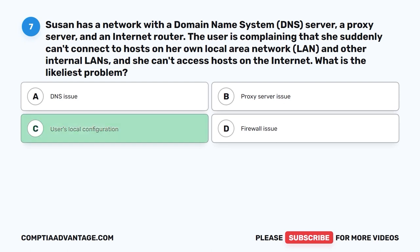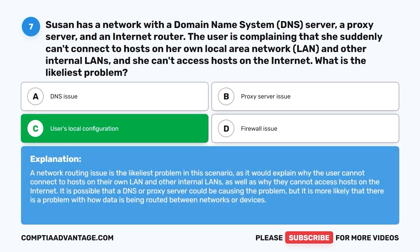The correct answer is C. User's local configuration. A network routing issue is the likeliest problem in this scenario, as it would explain why the user cannot connect to hosts on their own LAN or other internal LANs, as well as why they cannot access hosts on the internet. It is possible that a DNS or proxy server could be causing the problem, but it is more likely that there is a problem with how data is being routed between networks or devices.